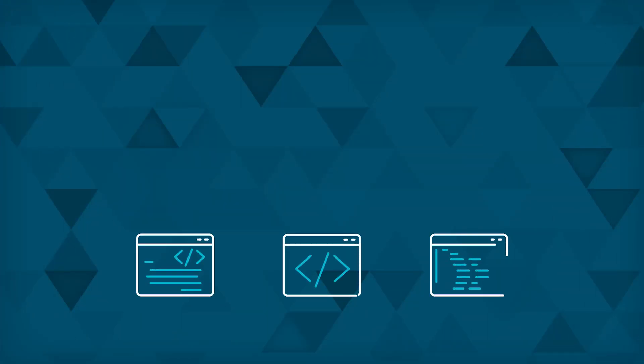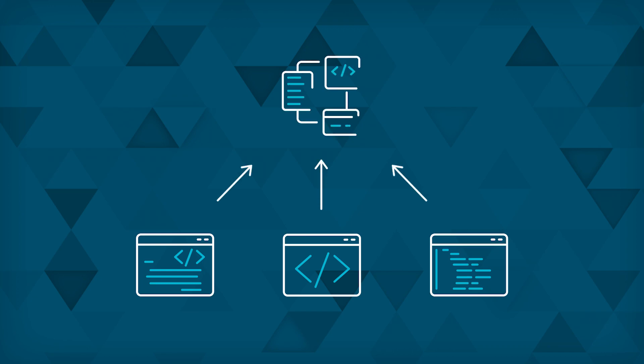First, let's talk about how conventional coding works. Typically, software developers write individual lines of code to represent instructions and data. Then they organize the code into functional routines and modules. This requires a lot of detailed knowledge about coding languages, development environments, testing, and deployment tools.